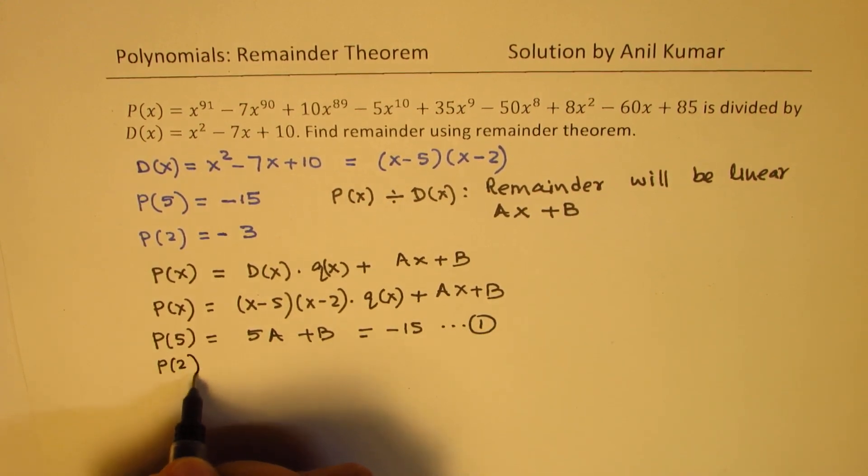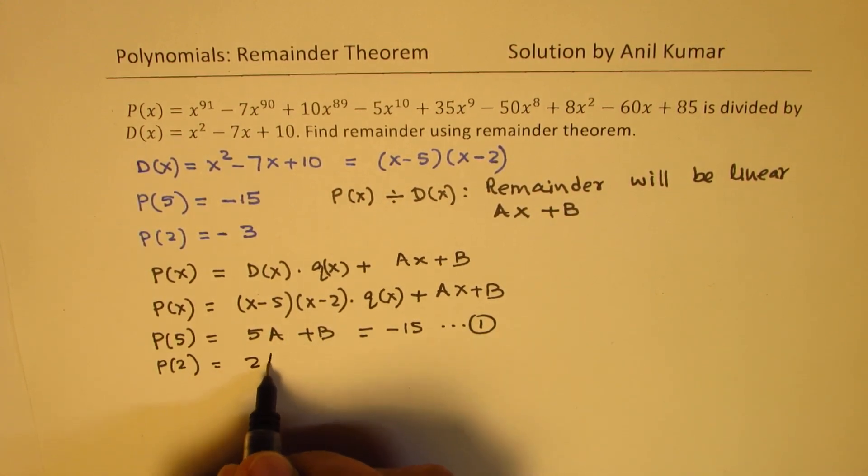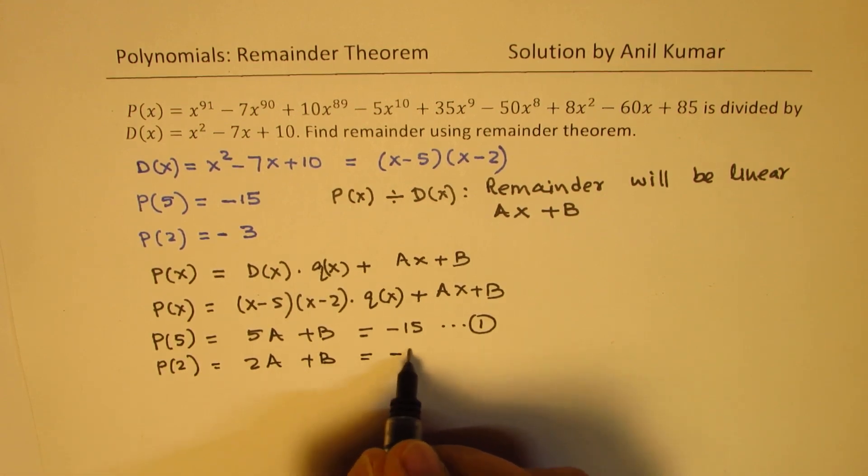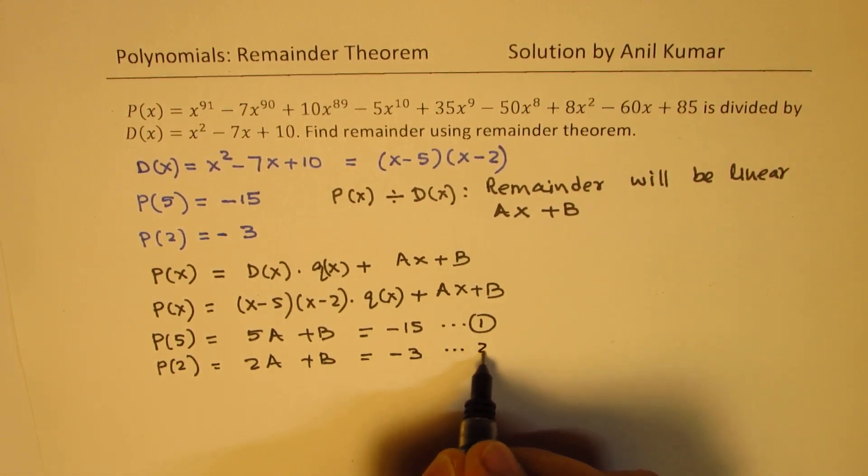And if I substitute 2, in that we get 2A plus B, and that should be equal to minus 3. So that is our second equation to work with.